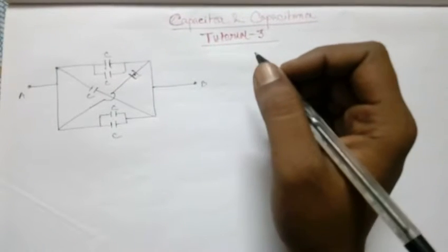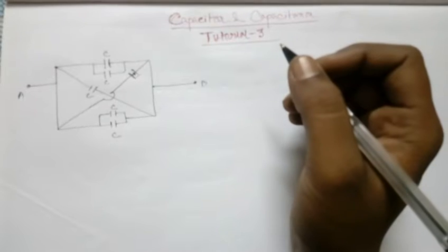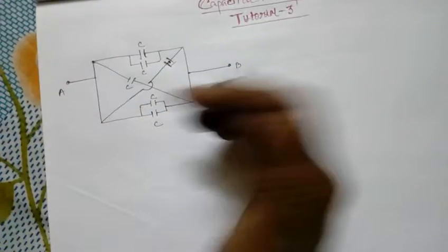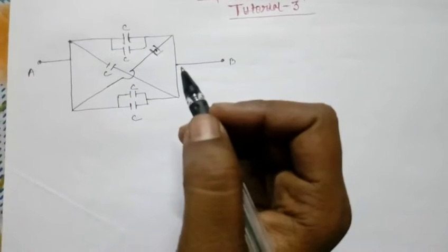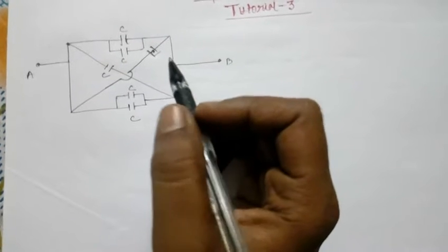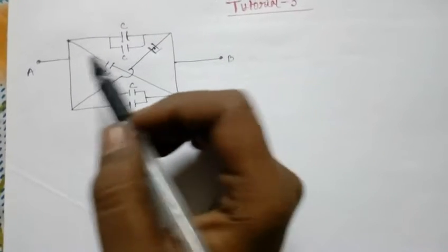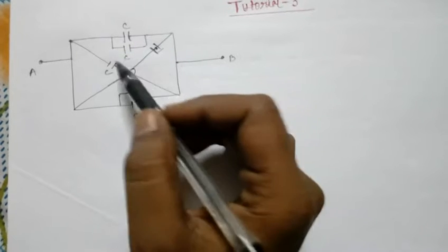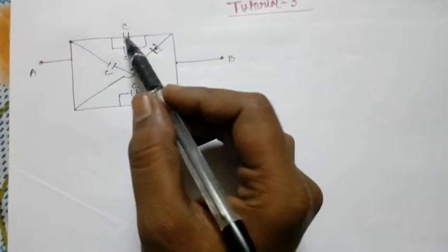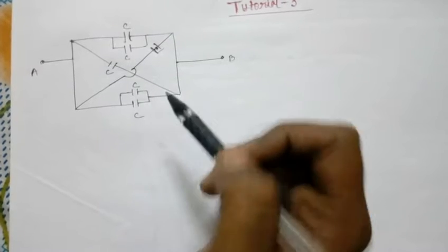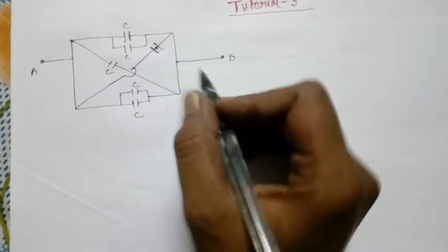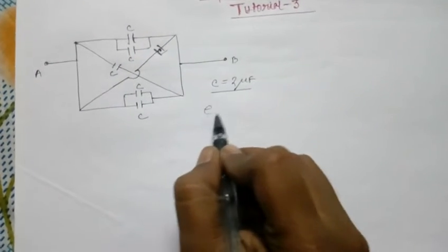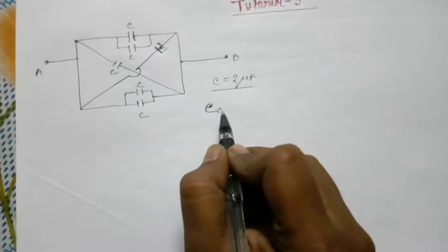Hello friends, let's start another two or three examples today on the same topic: capacitor and capacitance. We have an example with a passive circuit and we have to find out the equivalent capacitance between A and B. All six capacitors are given as C, and all have the same value: C equals two microfarads. Find C equivalent.